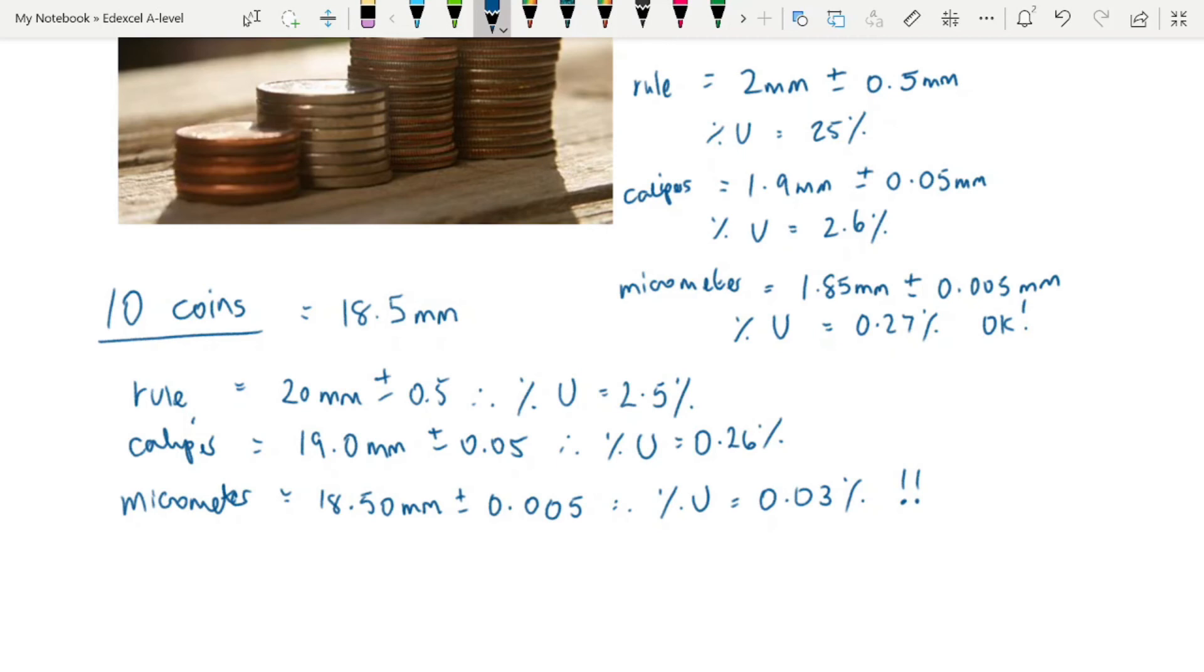And when you then divide this 18.50 by 10, to get to the thickness of one coin, you carry the same percentage uncertainty with you.